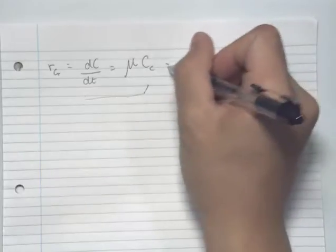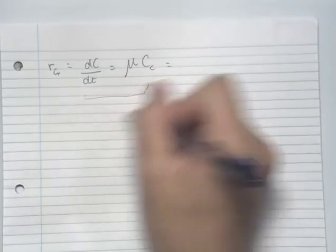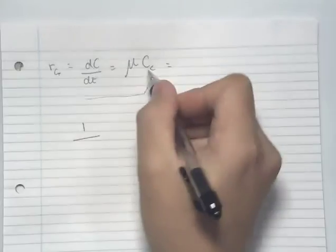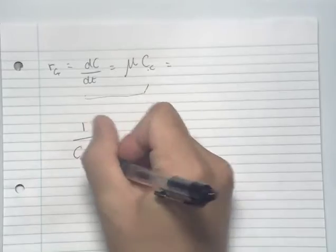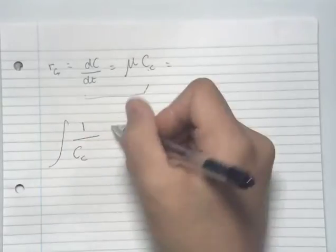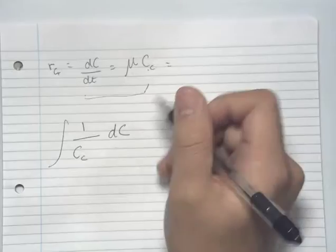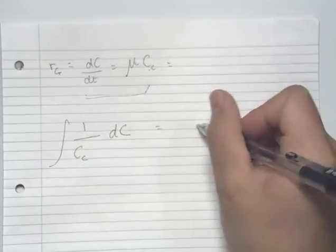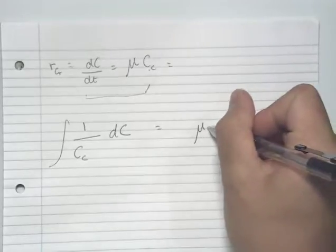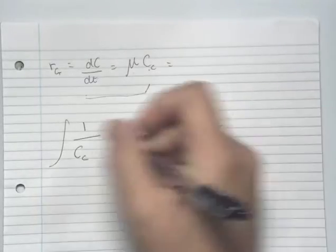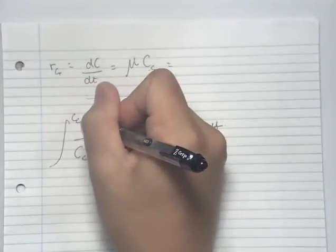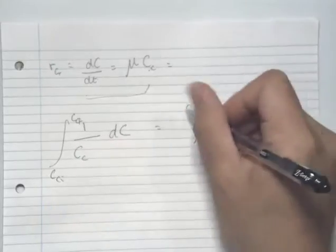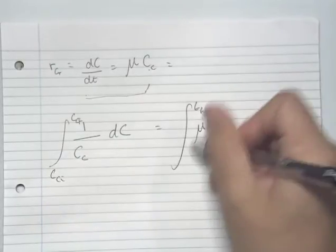We can do this by putting 1 over the concentration onto the left hand side of the equation as dc, and by moving the time derivative to the right hand side. Putting our limits in of our final concentration and our initial concentration of cells, and our final time and our initial time.